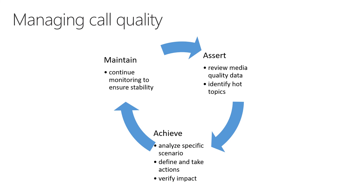Achieving call quality is not a one-time action — it's a continuous cycle of asserting, achieving and maintaining. The quality champion needs to assert by reviewing media quality data and identifying hot topics; then achieve by analyzing specific scenarios, defining and taking actions, and verifying the impact; and then maintain by continuing to monitor to ensure stability. And then it starts all over again.